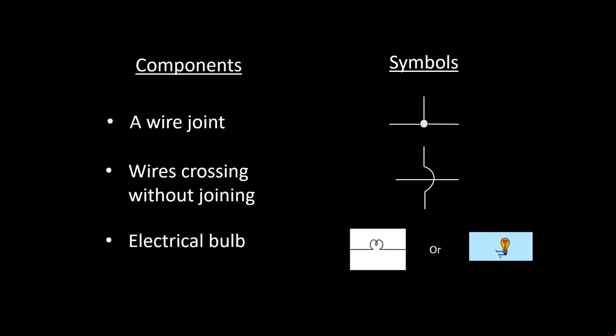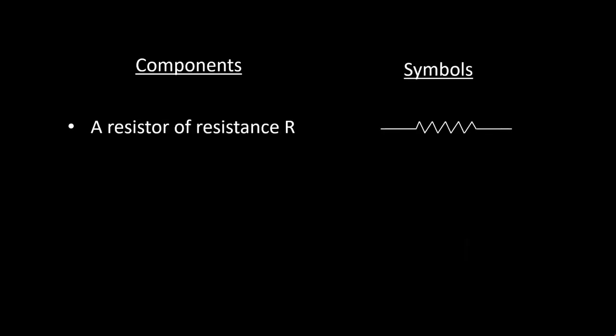Next one is electrical bulb. Electrical bulb is a device which uses electricity to glow. Next component is a resistor of resistance R. Resistor is used to restrict the amount of current flow in the circuit.